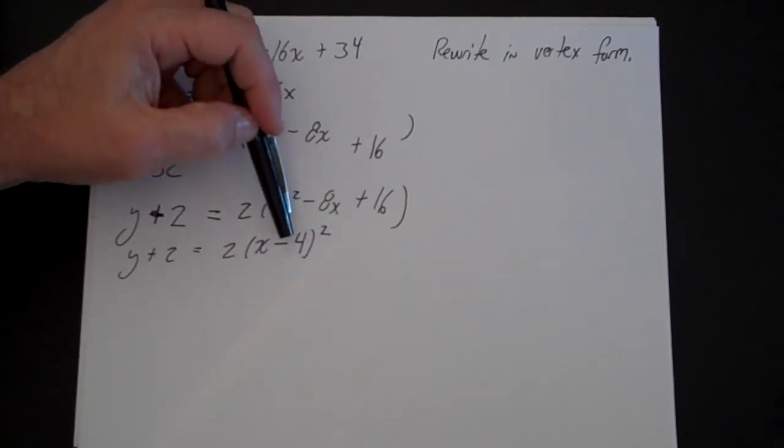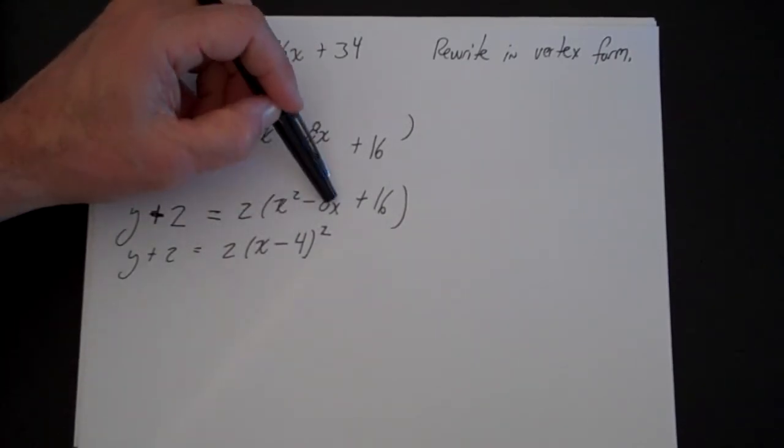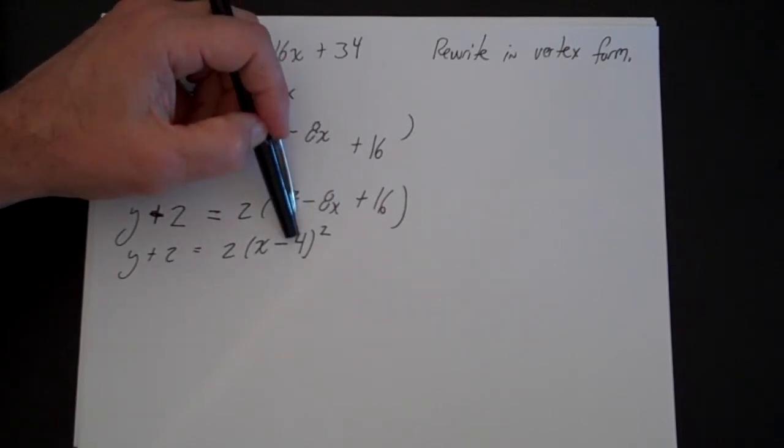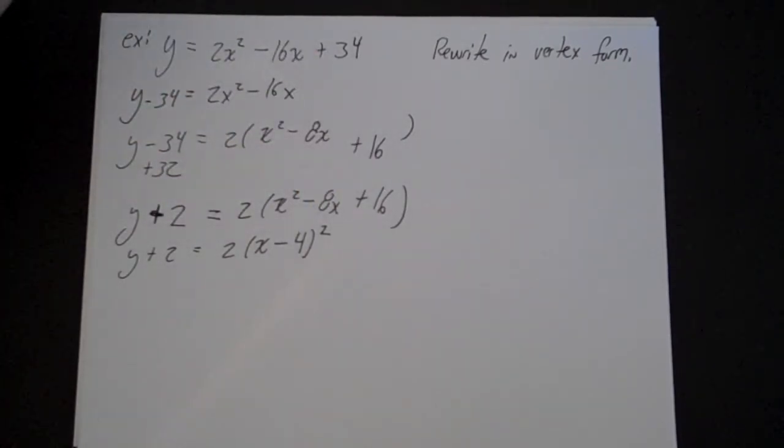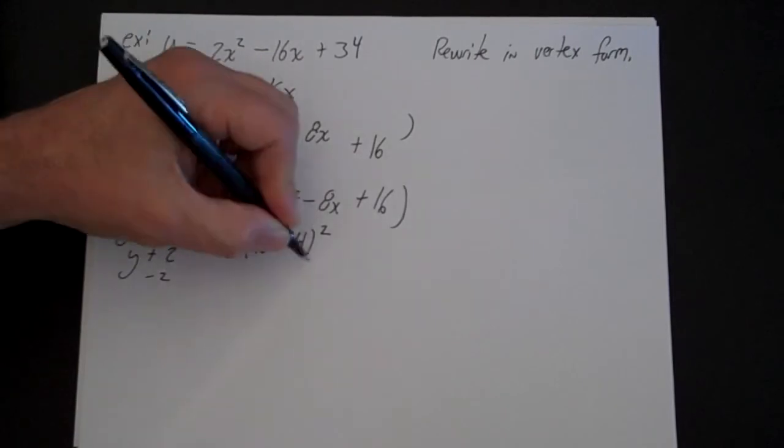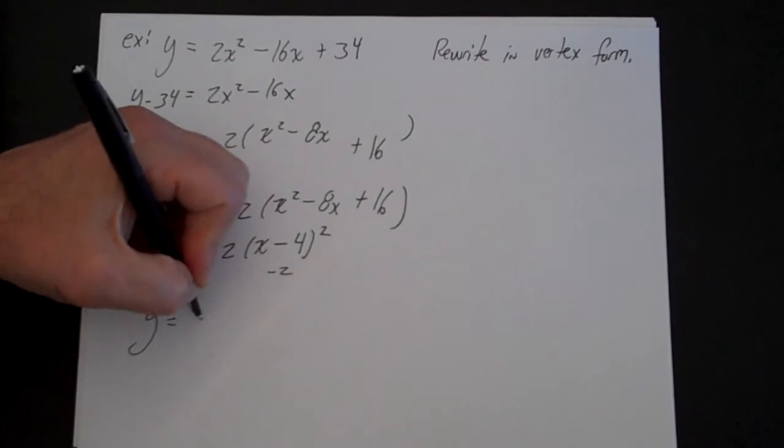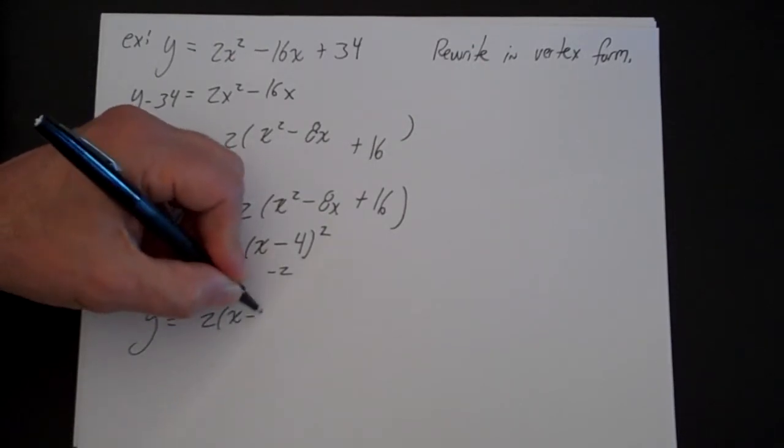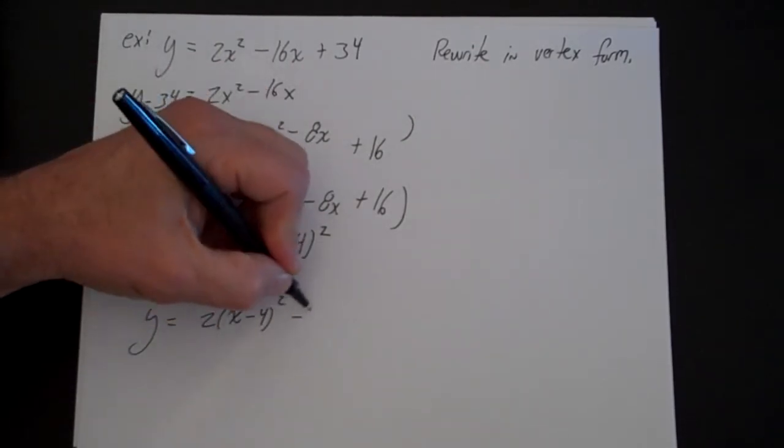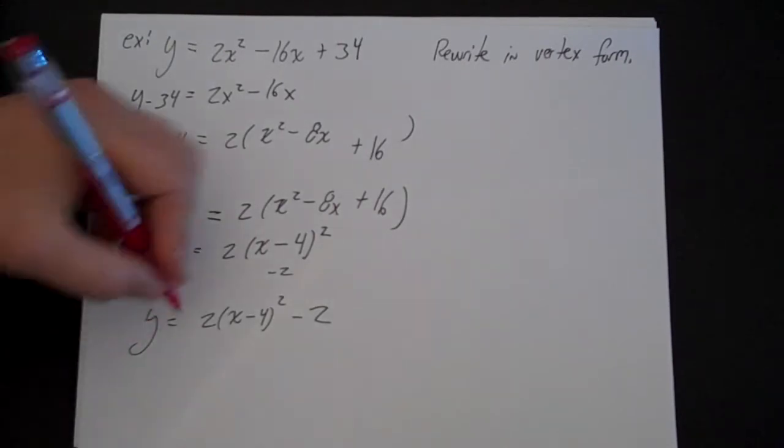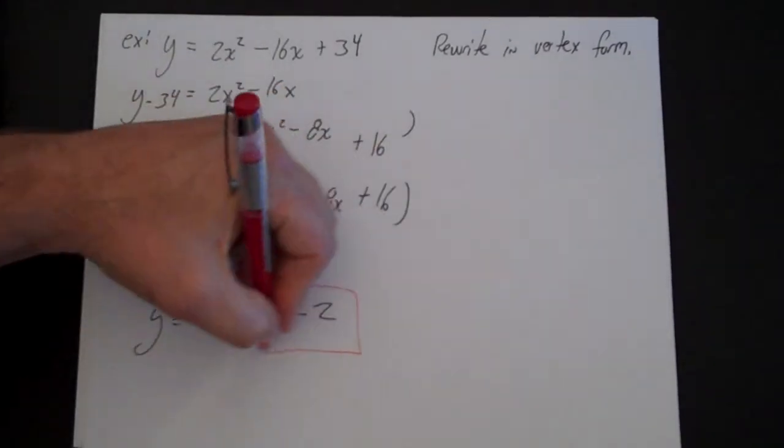Minus 4 plus minus 4 is minus 8. Minus 4 times minus 4 is going to be a positive 16. The last step is I'm going to subtract 2 from both sides. I'm going to get y equals 2 times x minus 4 squared minus 2, and that's my final answer.